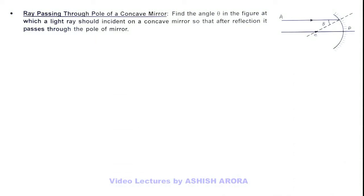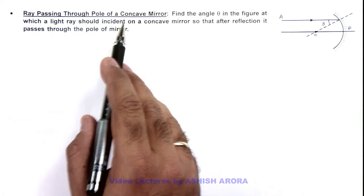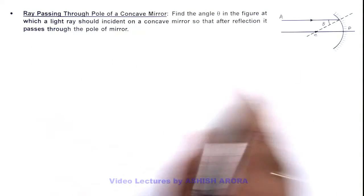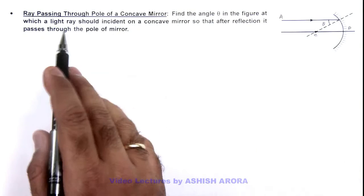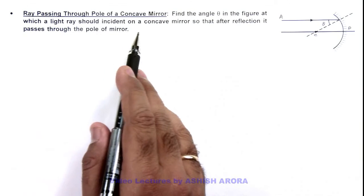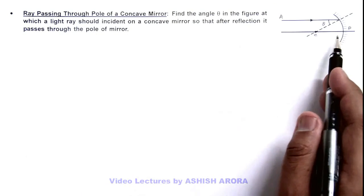In this illustration we'll discuss a situation where a light ray passes through the pole of a concave mirror. Here we are required to find the angle theta in this figure at which a light ray should incident on a concave mirror so that after reflection it passes through the pole of this mirror.